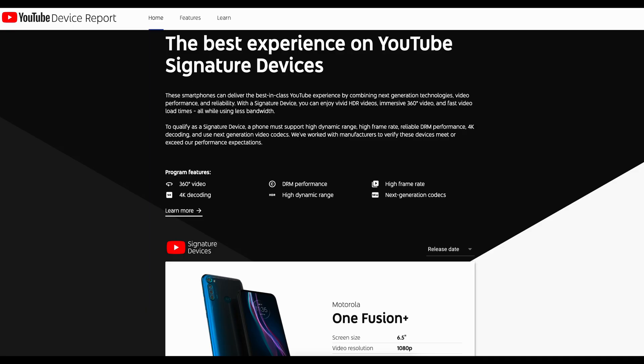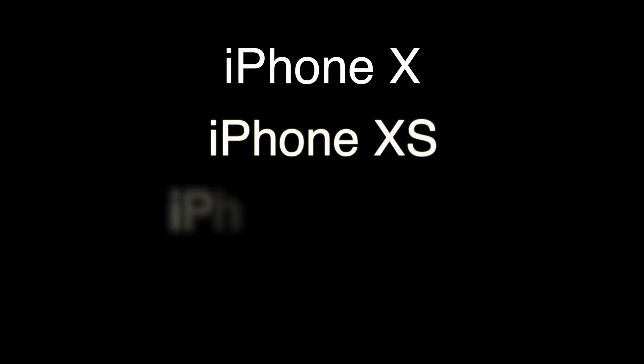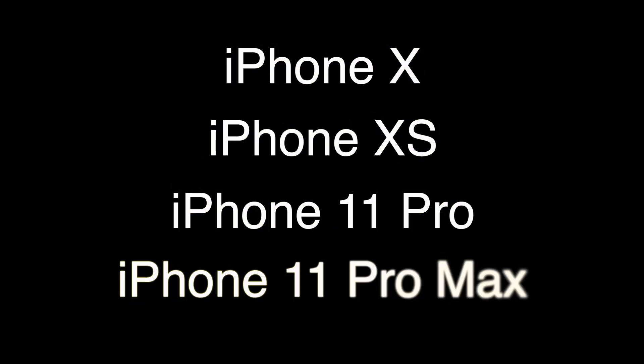Now let's talk about mobile devices that can display HDR content from YouTube. There is a link in the description to a list of Android devices that are YouTube HDR ready — this list is constantly growing and most new mobile devices are HDR compatible. For iOS, at the time of recording, iPhones 10, XS, 11 Pro, and 11 Pro Max can display HDR content from YouTube.